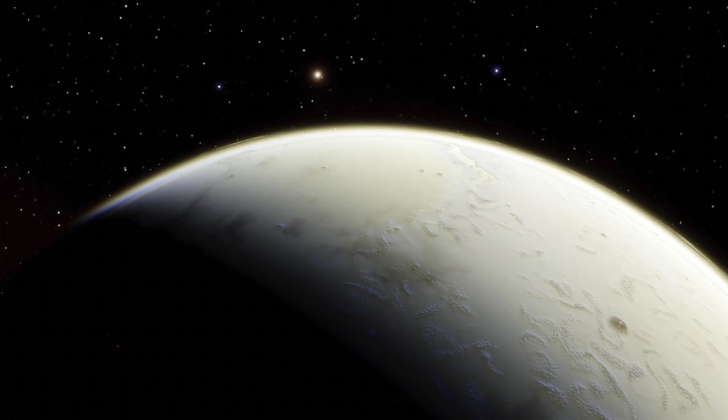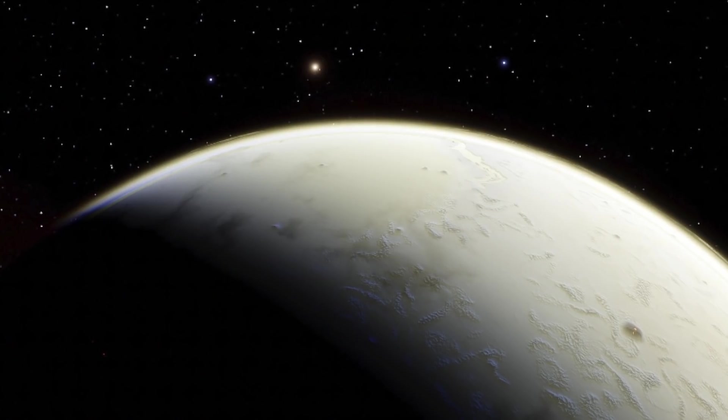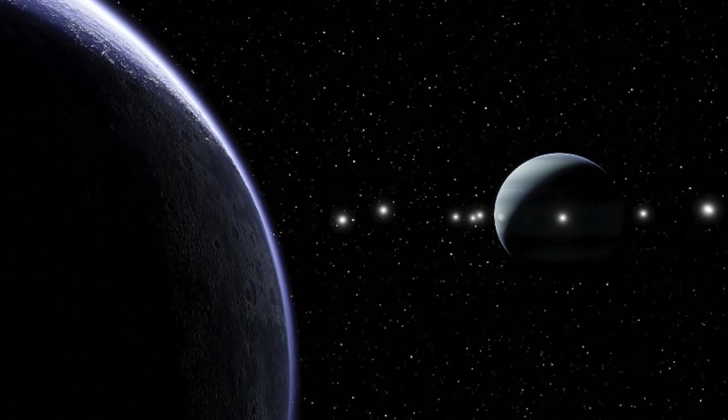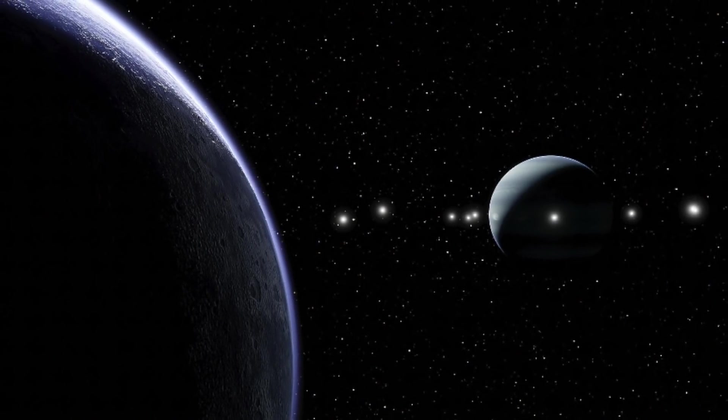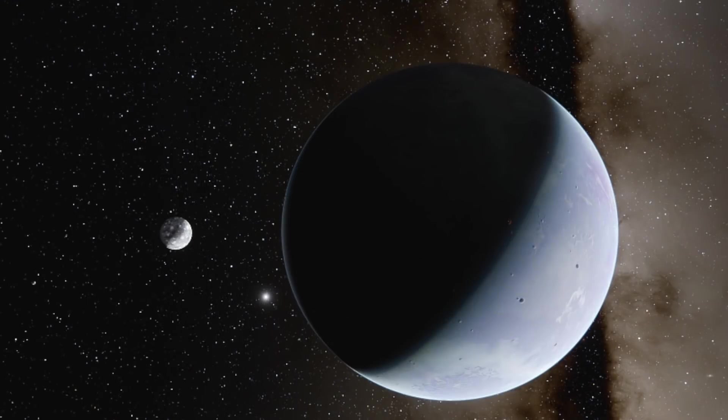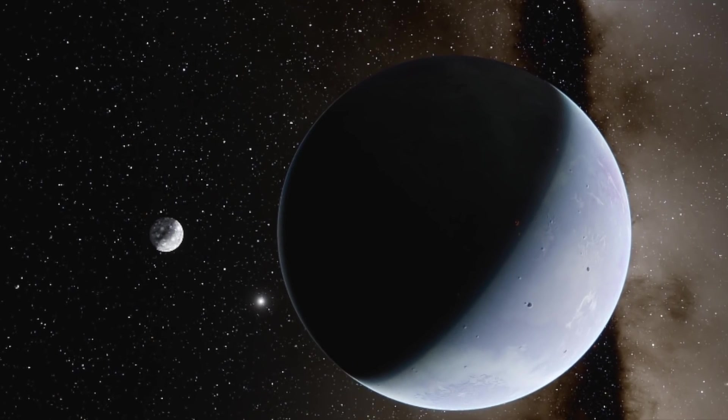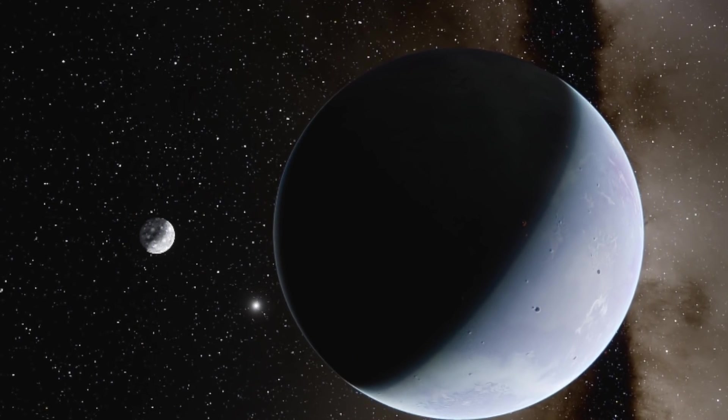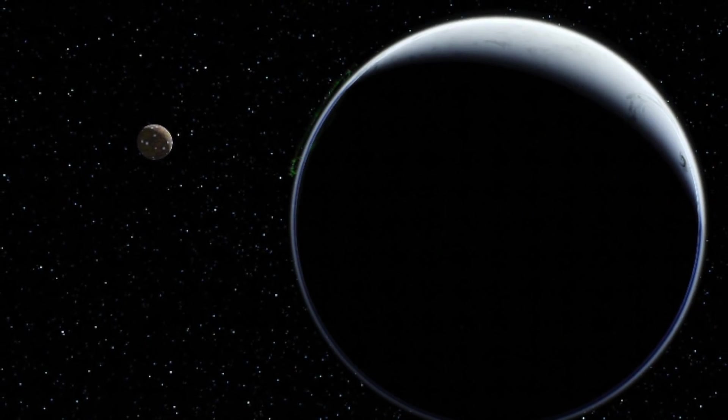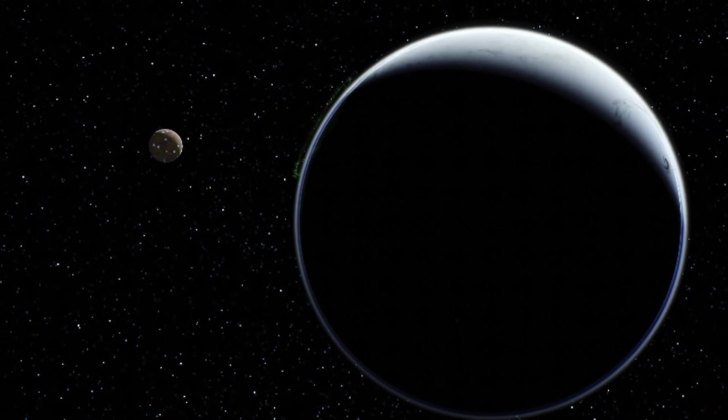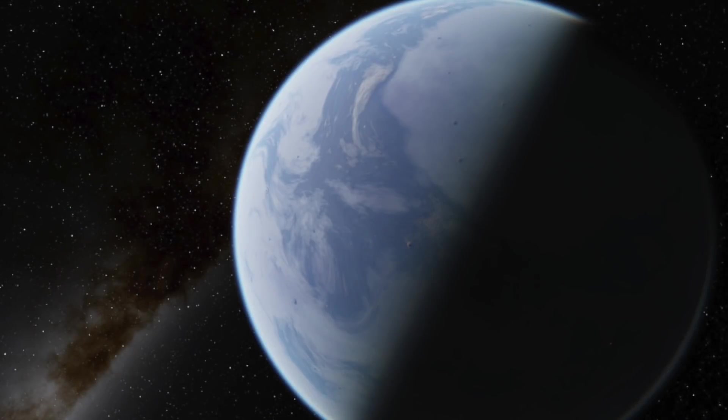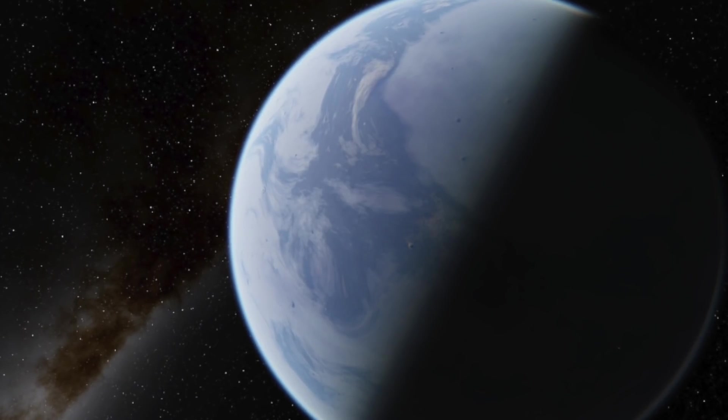One exoplanet discovered in January of 2021 by TESS is TOI-640b. Following the discovery, scientists used a variety of techniques, including spectroscopic and photometric observations, to confirm that this was indeed an exoplanet. The results described TOI-640b as a low-density super-Neptune planet transiting an M dwarf star. Overall, what we know about the exoplanet so far is that it lies 1,115 light years away from Earth.